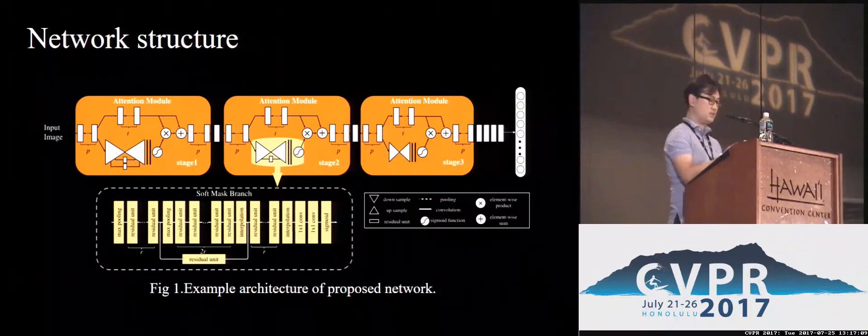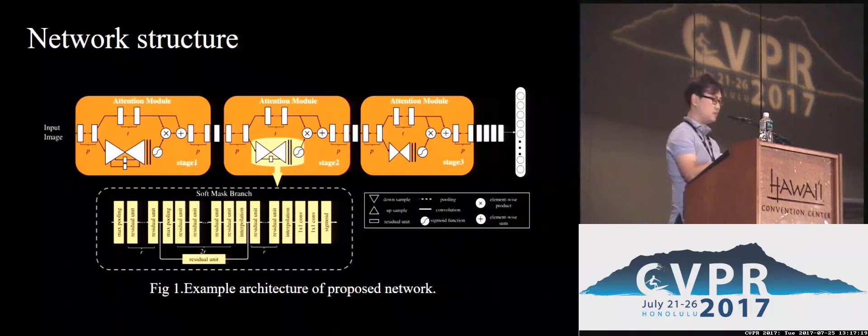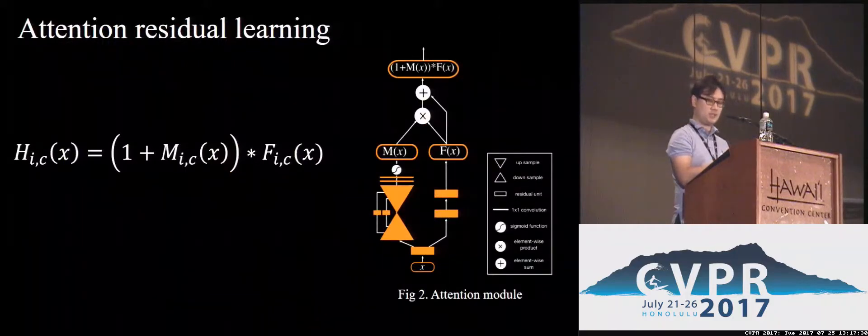The mask branch uses bottom-up, top-down structure to learn same-size masks. The mask softly weights output features of the corresponding trunk branch. The attention mask not only serves as a feature selector during forward inference, but also a gradient updater during backpropagation. This property makes the attention module robust to noisy labels.